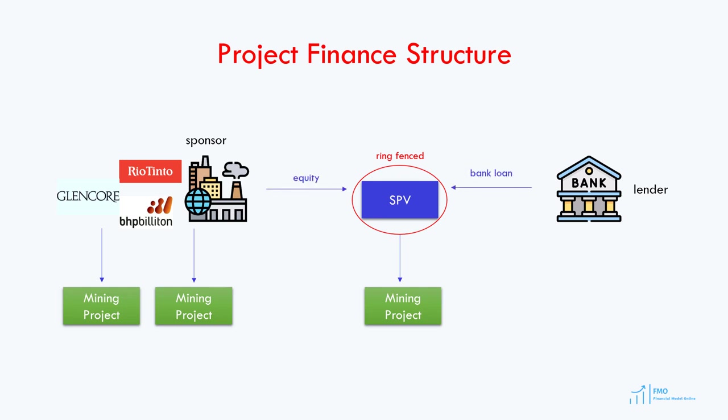The lender will take the assets of the SPV as security, and these assets may include the equipment, processing plant, and mining licenses. Once the mining project is operational and generating cash flow, it will repay the interest and principal to the lender, and the remaining cash flow will go to the sponsor in the form of dividends.